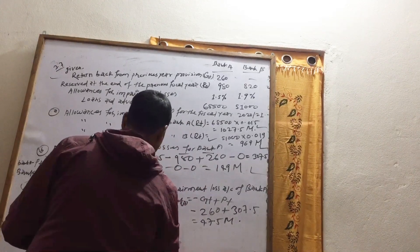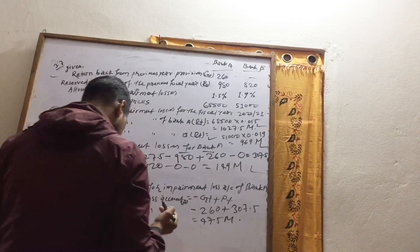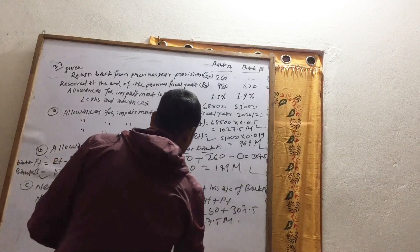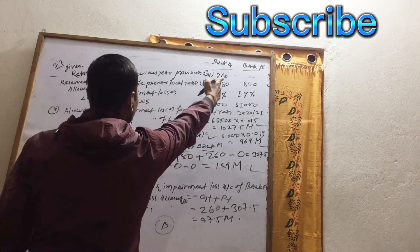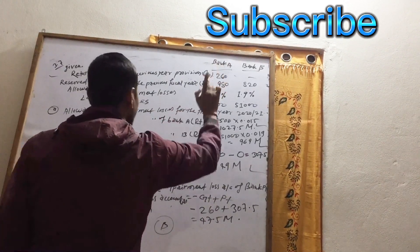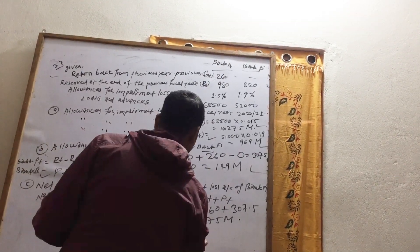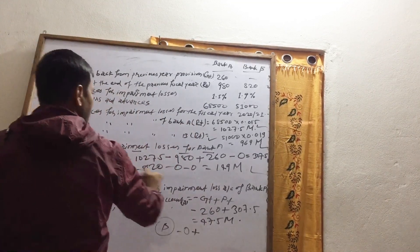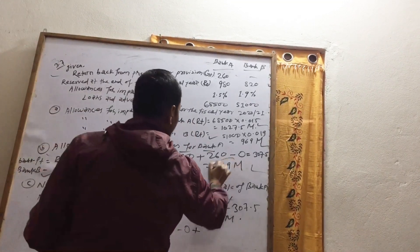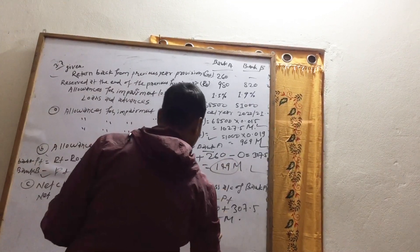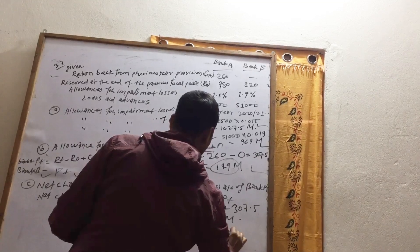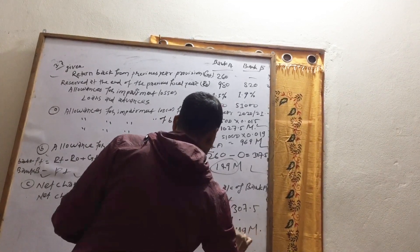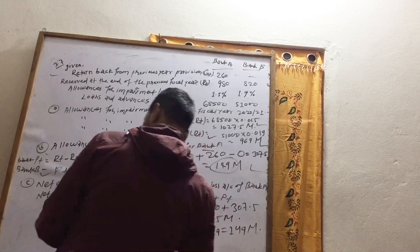For Bank B: net change equals minus GT plus PT. GT from the information given is zero. PT we calculated was 149. So, 0 minus 149 equals 149 million for Bank B.